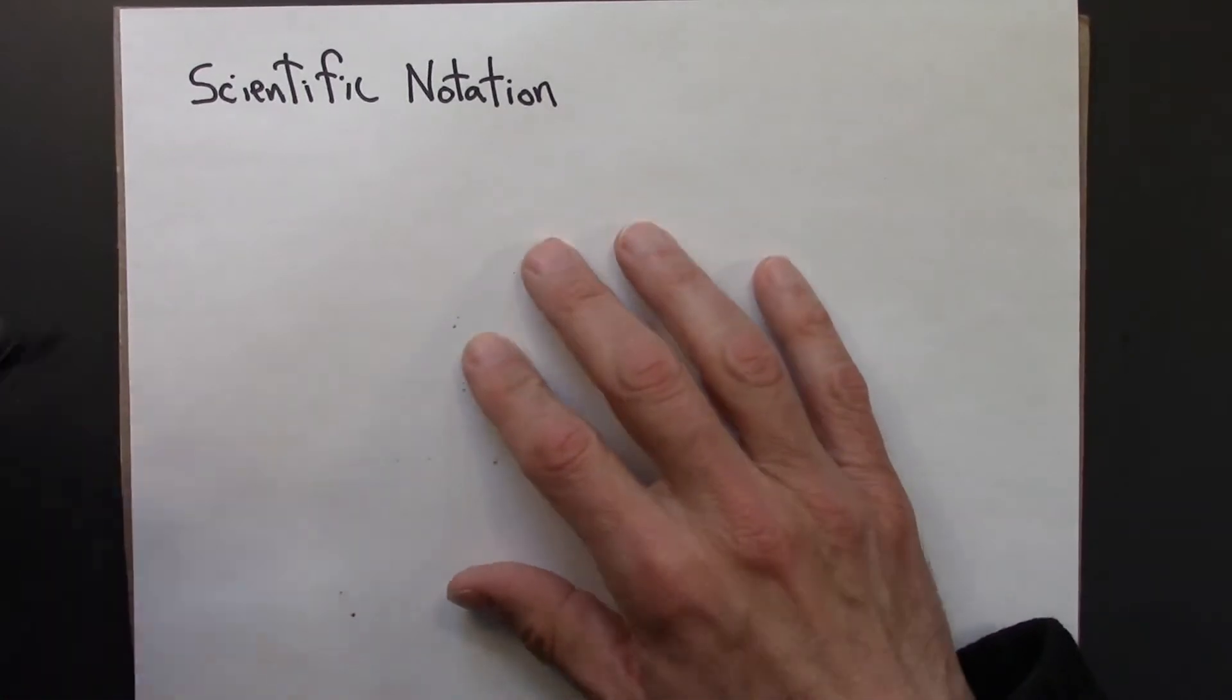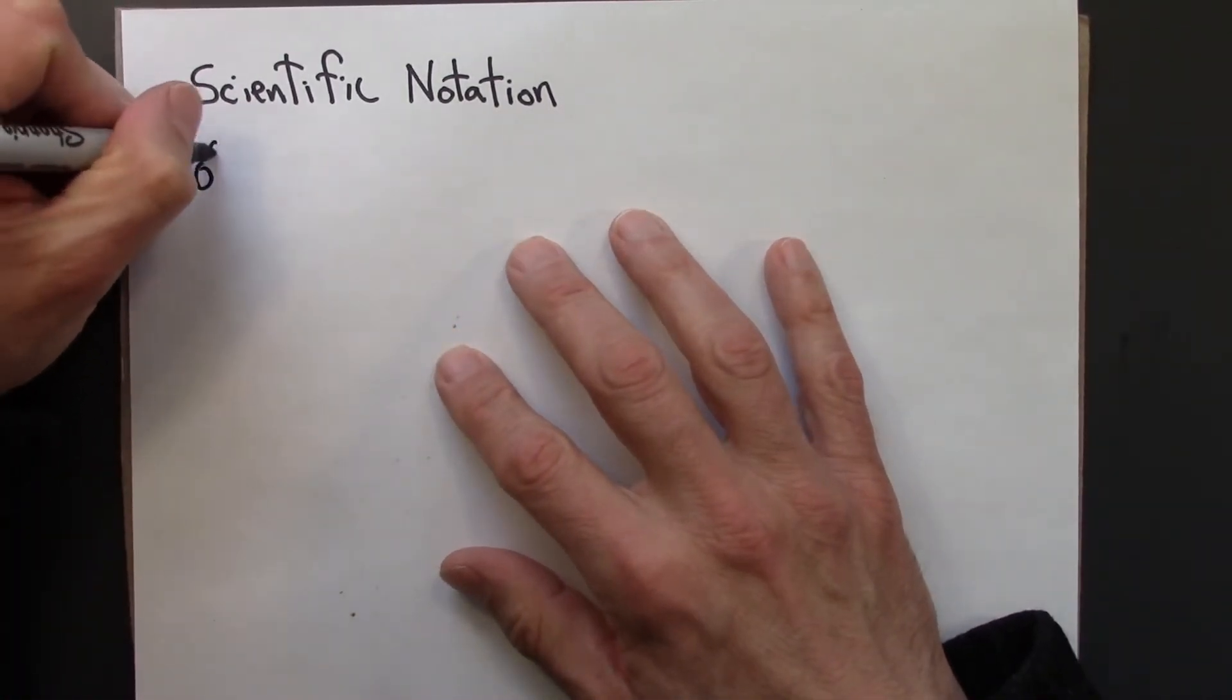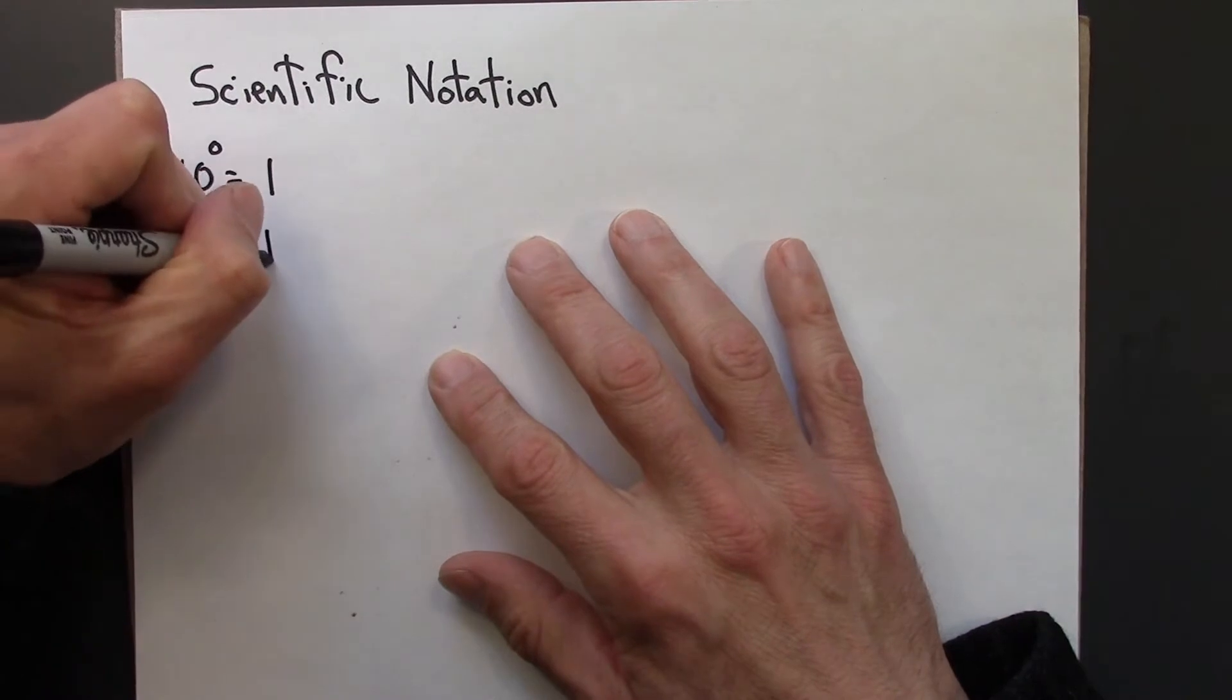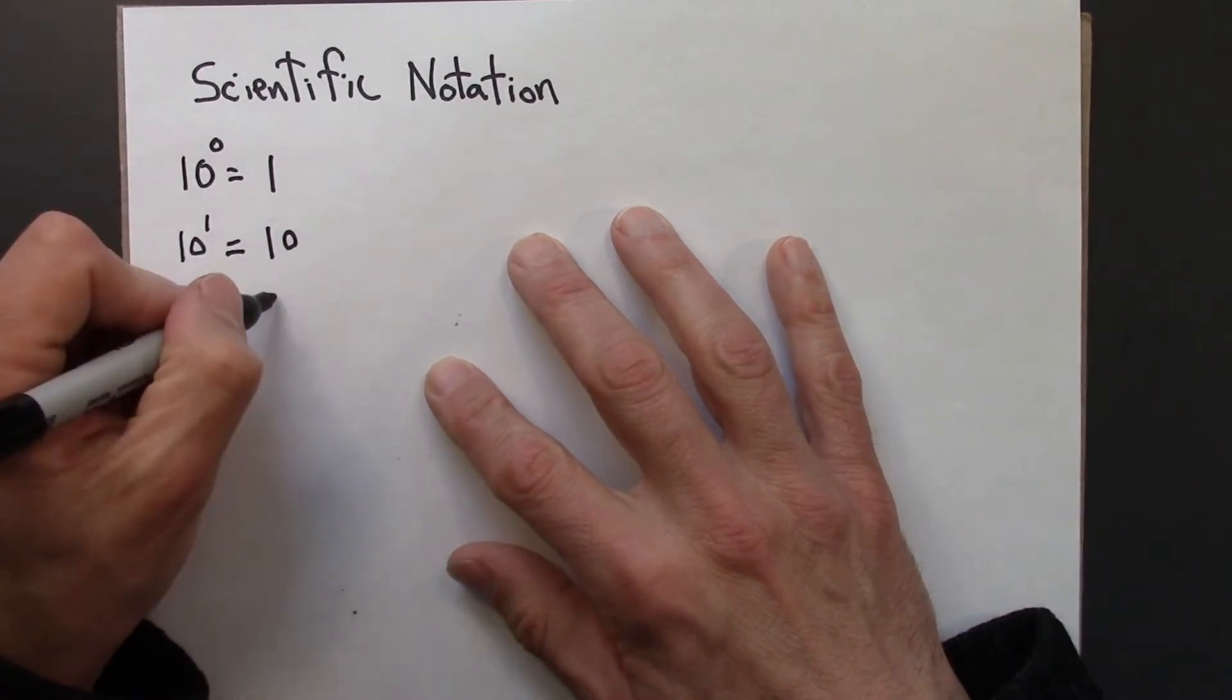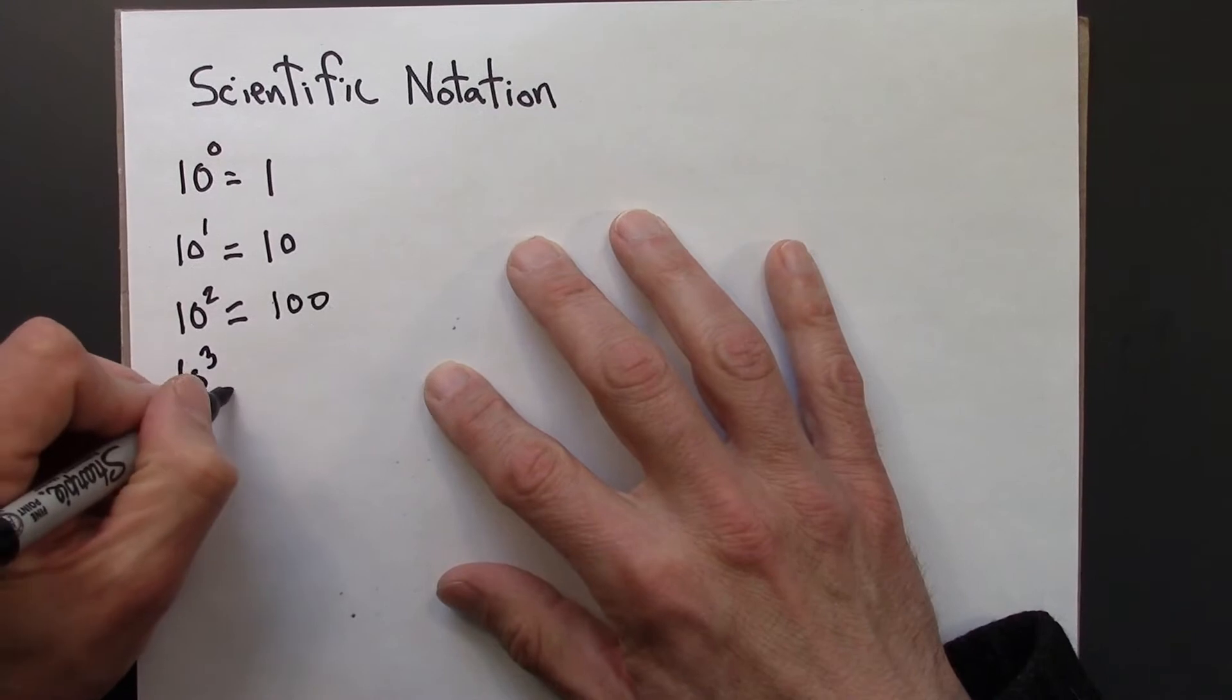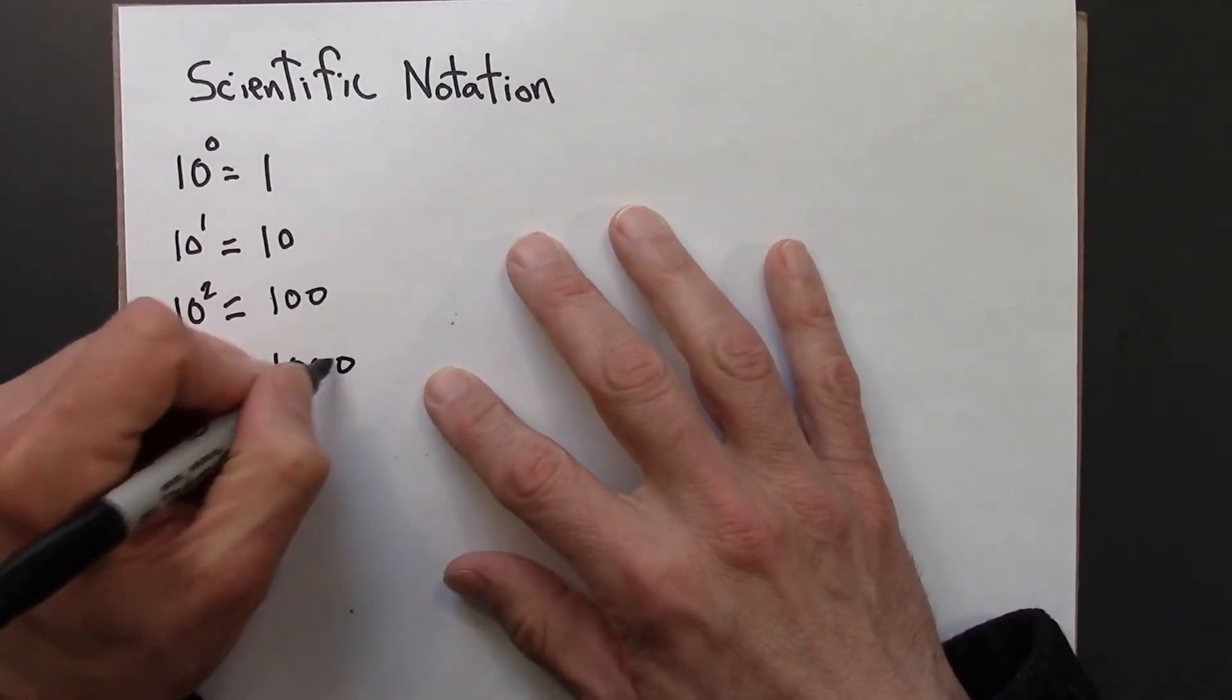Scientific notation uses powers of 10. So 10 to the 0 is defined to be 1. 10 to the 1 is 10. 10 squared is 10 times 10, that's 100. 10 cubed is 10 times 10 times 10, that's 1000.